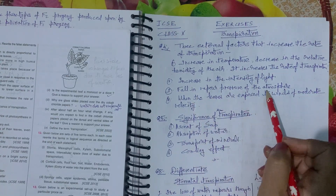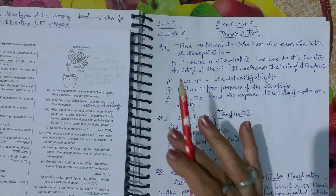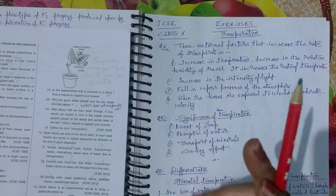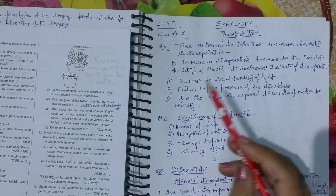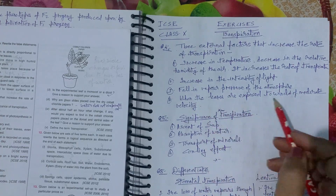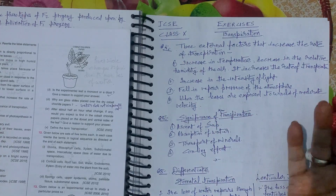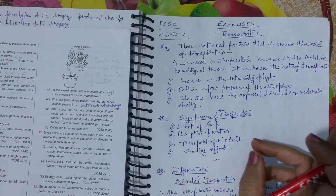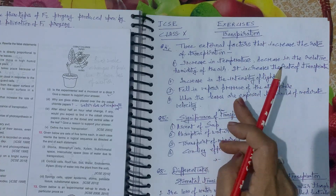If the water vapors in the atmosphere are more, transpiration will be less. If the water vapors are less — meaning high temperature — then transpiration will be more. And when the leaves are exposed to wind, transpiration will be more; if there is no wind, transpiration will be less.